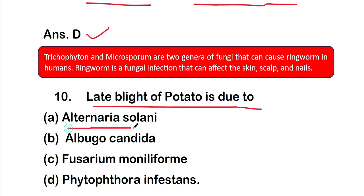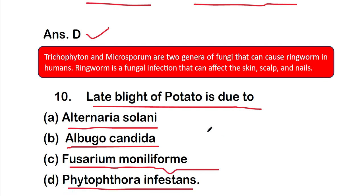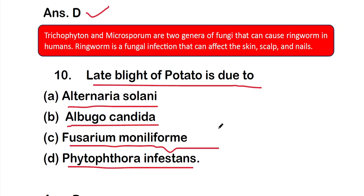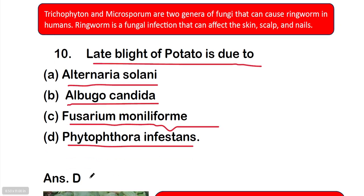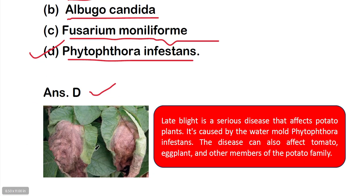Question 10: late blight of potato is due to — option A: Alternaria, option B: Albugo candida, option C: Fusarium moniliforme, or option D: Phytophthora infestans. The right answer is option D, Phytophthora infestans. Late blight of potato is due to Phytophthora infestans.